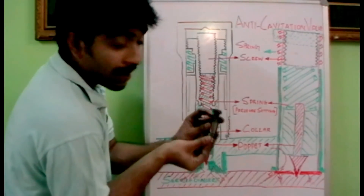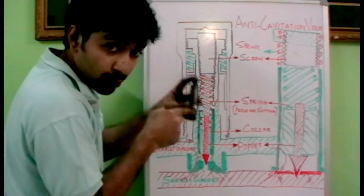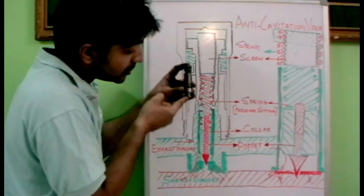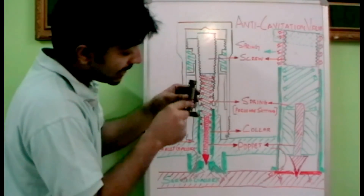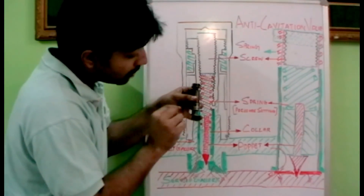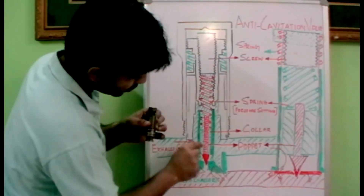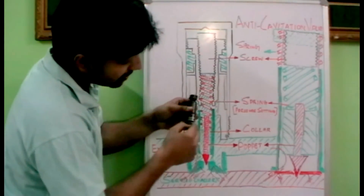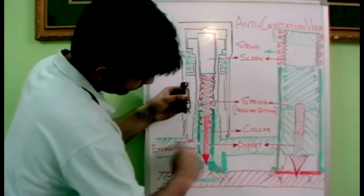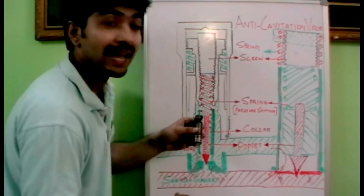This spring will be in tension. When the pressure over here drops and we have more pressure in the exhaust gallery, this unit drops. We have an opening over here and we have ports over here. The oil from the exhaust gallery enters these holes, passes through this area, and it opens and comes from the exhaust gallery towards the service gallery, supporting the service gallery to avoid cavitation.